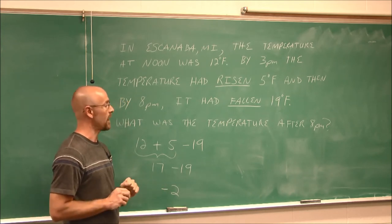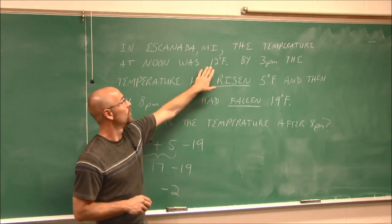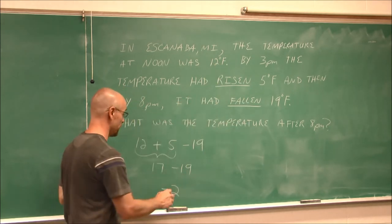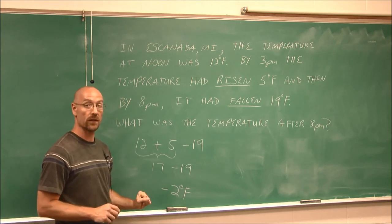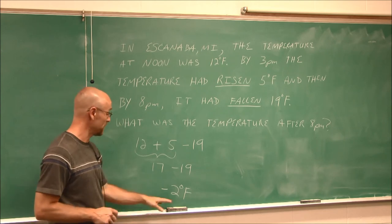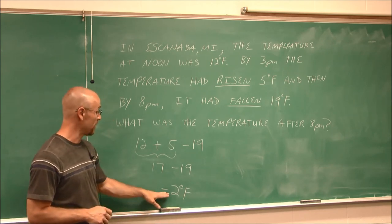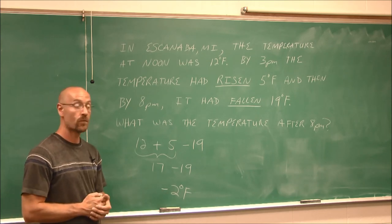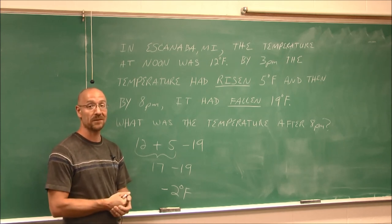But because this is an application problem, we have to remember one important concept, units. We were dealing with temperature in degrees Fahrenheit. So I have to remember that this is the temperature in degrees Fahrenheit. So we see an application of integers. And like I said, if you're familiar with this area, many times during the year, these are common temperatures that we have. It was negative 2 degrees Fahrenheit for this example. So this has been 1.9, part 2. I appreciate you watching. Thank you.